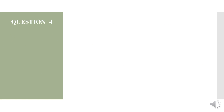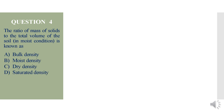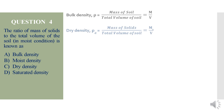Question 4: The ratio of mass of solids to the total volume of the soil in moist condition is known as — options are bulk density, moist density, dry density, or saturated density. Bulk density (ρ) is the mass of soil divided by total volume of the soil mass: M/V. Dry density (ρd) is the mass of solids divided by total volume of soil: Ms/V.